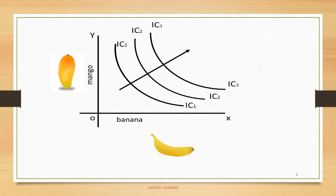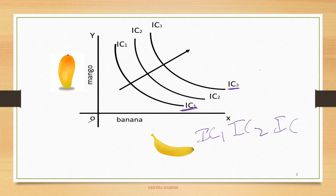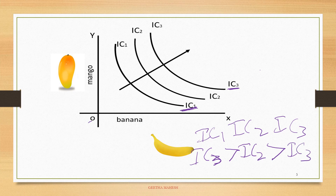Higher the indifference curve, higher will be the level of satisfaction. Lower the indifference curve, lower will be the level of satisfaction. You can see the arrow moving upward towards the right of the origin. When indifference curves move far away from the origin, they give a higher level of satisfaction, and those closer to the origin give a lower level of satisfaction. You have three indifference curves — IC1, IC2, IC3. IC3 will give a higher level of satisfaction than IC2, and IC2 gives a higher level of satisfaction than IC1. So, the consumer's preference will always be on that combination which lies on a higher indifference curve because it gives a higher level of satisfaction.